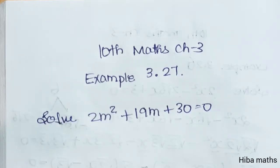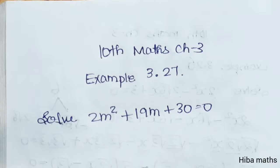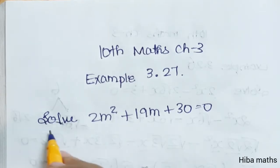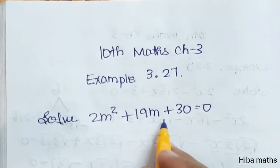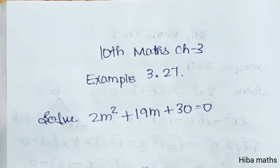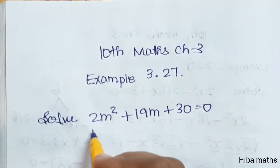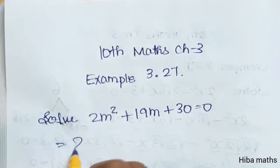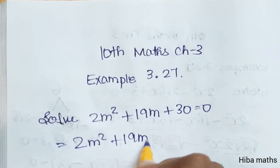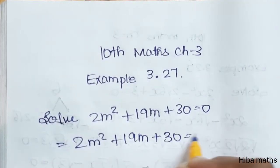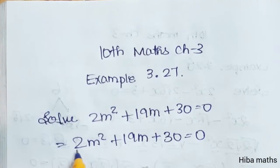Hello students, welcome to Hibamax. In standard max, chapter 3, example 3.27: solve 2m squared plus 19m plus 30 equals 0. So 2m squared plus 19m plus 30 is equal to 0. The first step is 2 into 30.